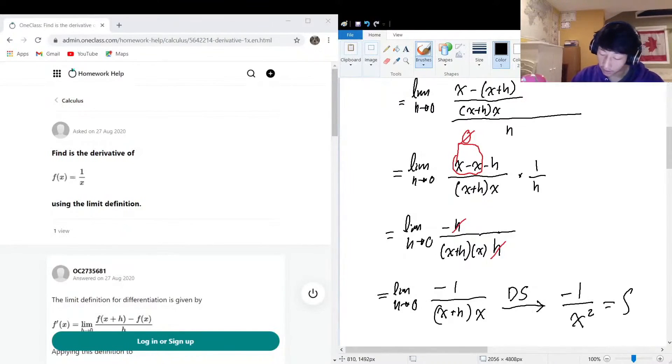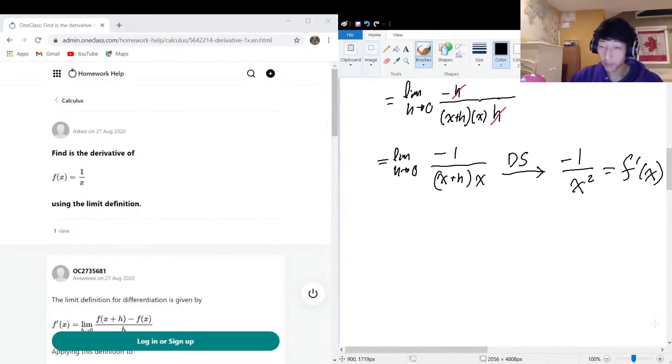Okay, so originally we had f(x) is equal to one over x. If we wanted to do the derivative the other way, like with the power rule, we know that this is equal to x to the power of negative one.